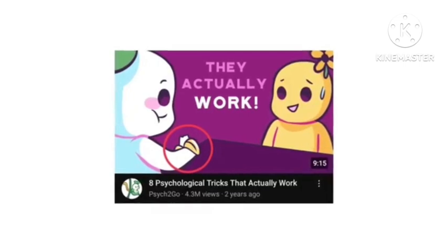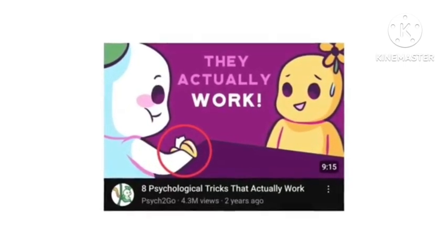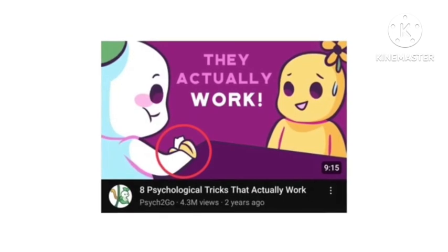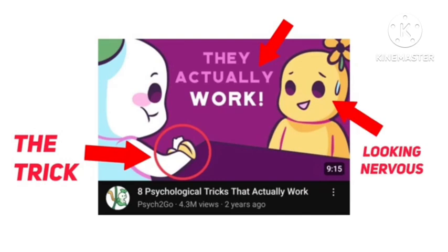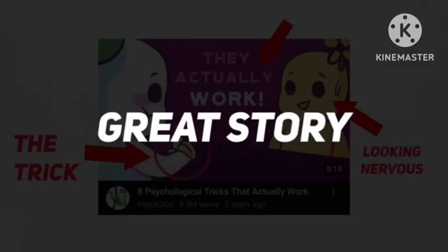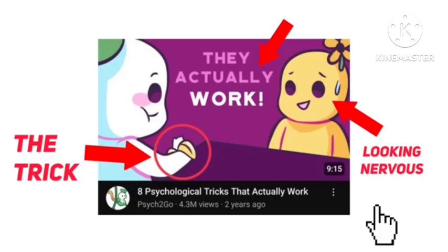In this thumbnail about '8 Psychological Tricks That Actually Work,' we have a humanoid character eating kale. Notice the red circle highlighting the kale, and the bold text which says 'they actually work.' We also have another character looking a little nervous because of the action of character one eating. Overall, this thumbnail tells a great story and makes us wonder that this psychological trick is finally being revealed. And that's why we are compelled to click on the video.